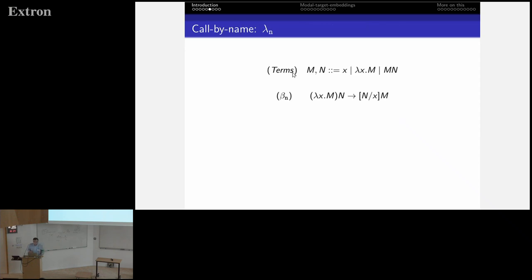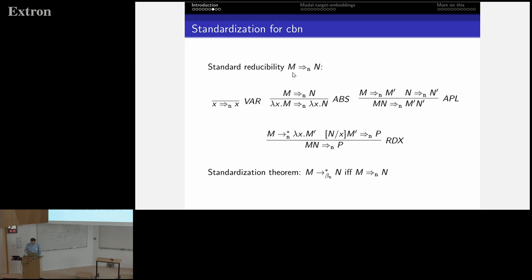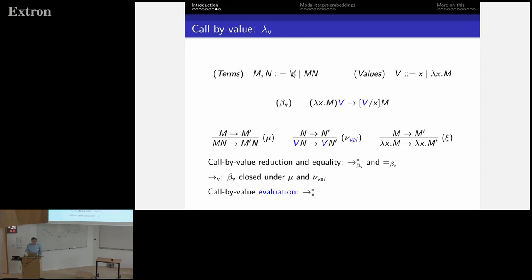Some recapitulation about call by name and call by value. This is the call-by-name lambda calculus — ordinary lambda terms, beta reduction. We need the notion of evaluation: evaluation is the weak head reduction, so we close the beta rule just under this closure rule. There is a standardization theorem — this is an inductive characterization of standard reducibility showing the contribution of evaluation for standard reduction, and the standardization theorem says this relation is the same as full reduction.